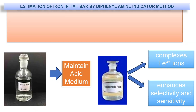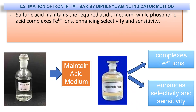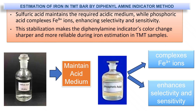What is the significance of adding sulfuric acid and phosphoric acid? Sulfuric acid maintains the required acidic medium, while phosphoric acid complexes with Fe³⁺ ions, which enhances the selectivity and sensitivity. This stabilization makes the diphenylamine indicator color change sharper and more reliable during iron estimation in TMT samples.